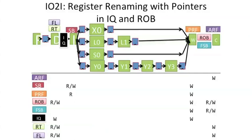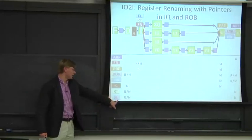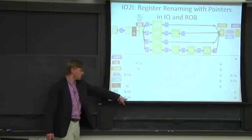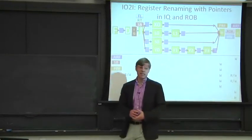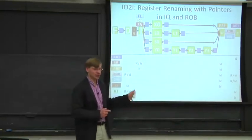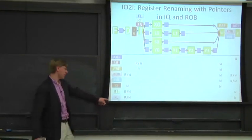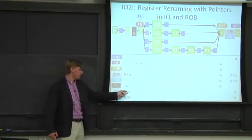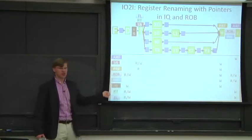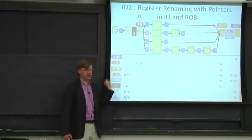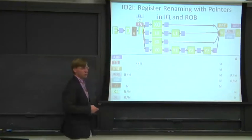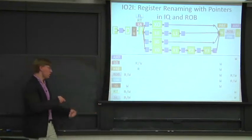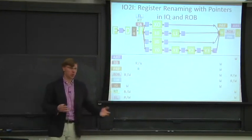For completeness, here's where everything gets written in the pipe over time. Two things to note: the free list gets updated at the front and also at the end of the pipe, and the condition for deallocating a physical register gets a little complicated. The rename table gets read at the front because it tells you where to find the value, and it gets updated when we emit an instruction down the pipe.